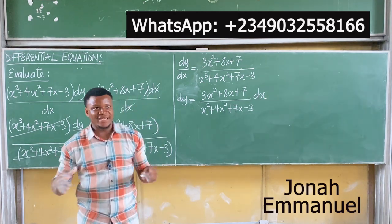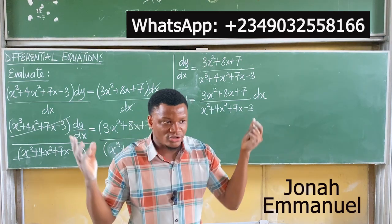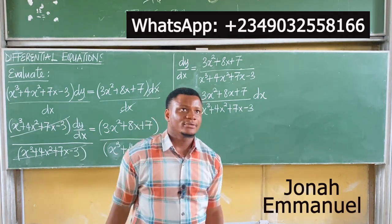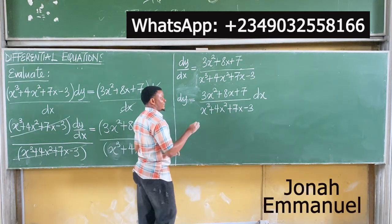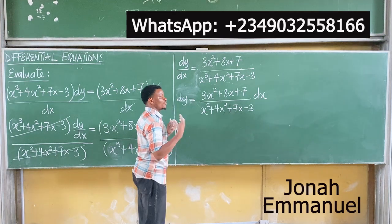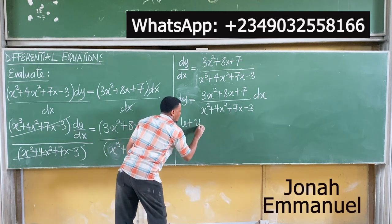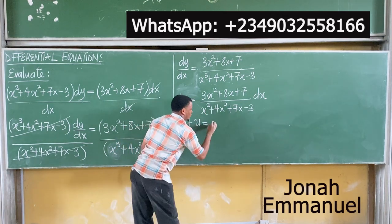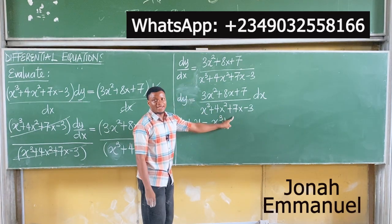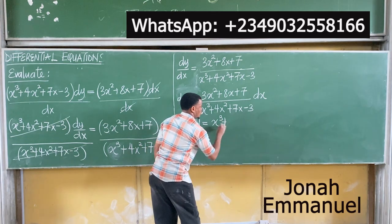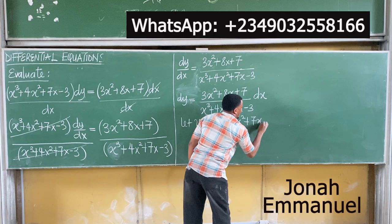The best method of learning integration is to solve problems repeatedly — your eyes become open and you begin to see the pattern. Knowing that if I differentiate the denominator I get the numerator, I will use integration by substitution. Let u be equal to x cubed plus 4x squared plus 7x minus 3.